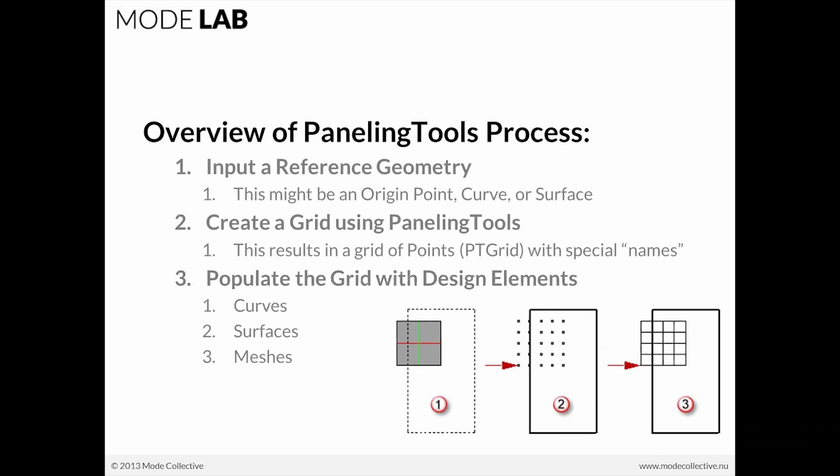The process of working with Paneling Tools is quite straightforward. The first step is that you input some sort of reference geometry — this might be an origin point of where you want your grid to start, a curve that you'd like to extrude a grid from, or a surface you'd like to populate a grid onto. The second is that you create a grid using Paneling Tools, resulting in a grid of points referred to as PT grids with special names. The last step is that you populate the grid with design elements — those might be curves, surfaces, or even meshes.